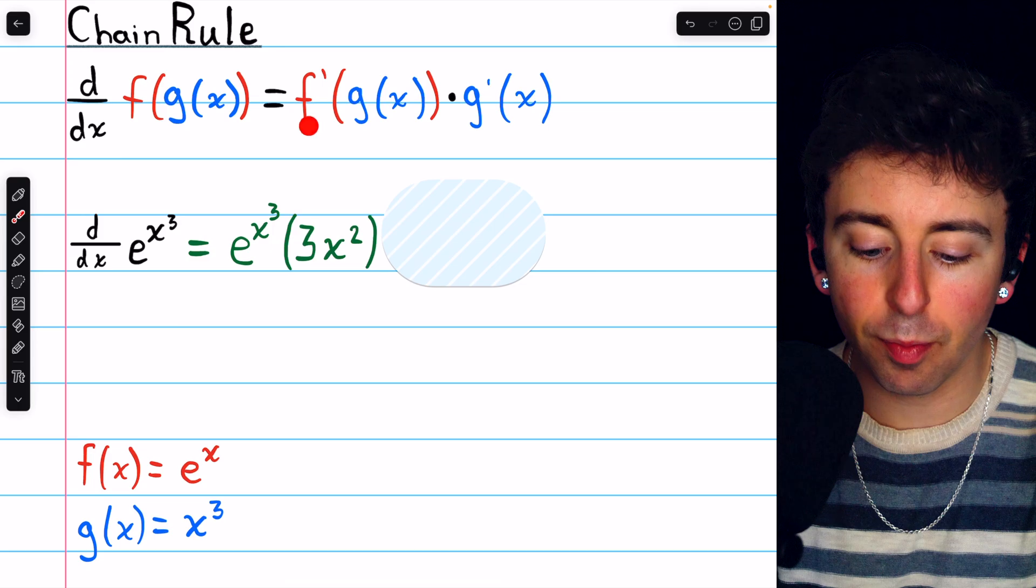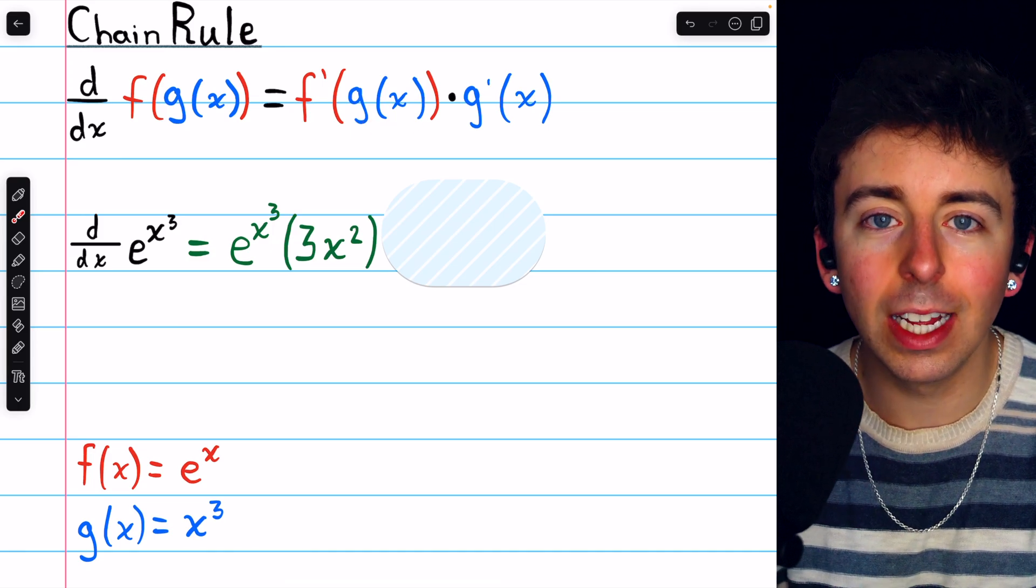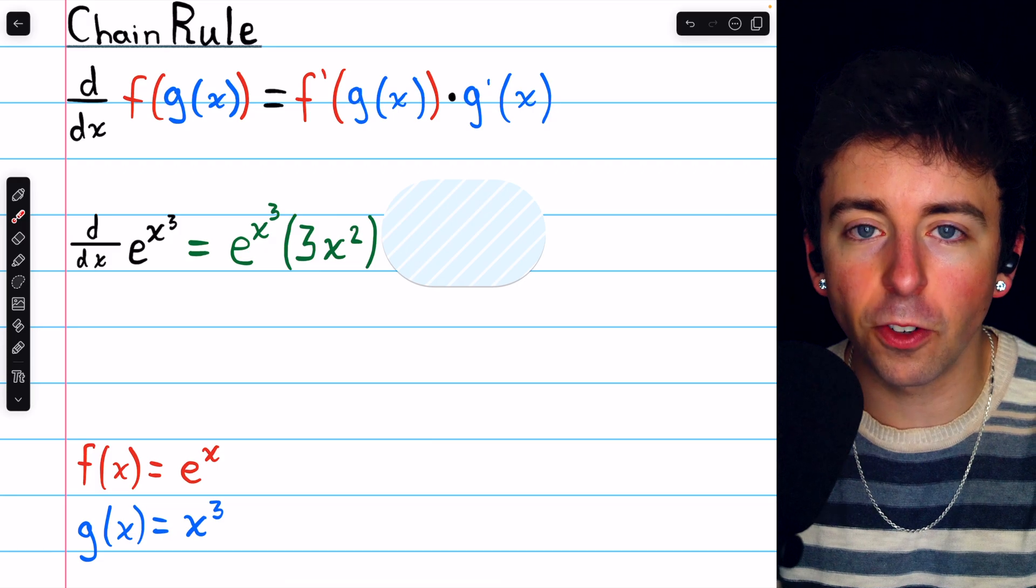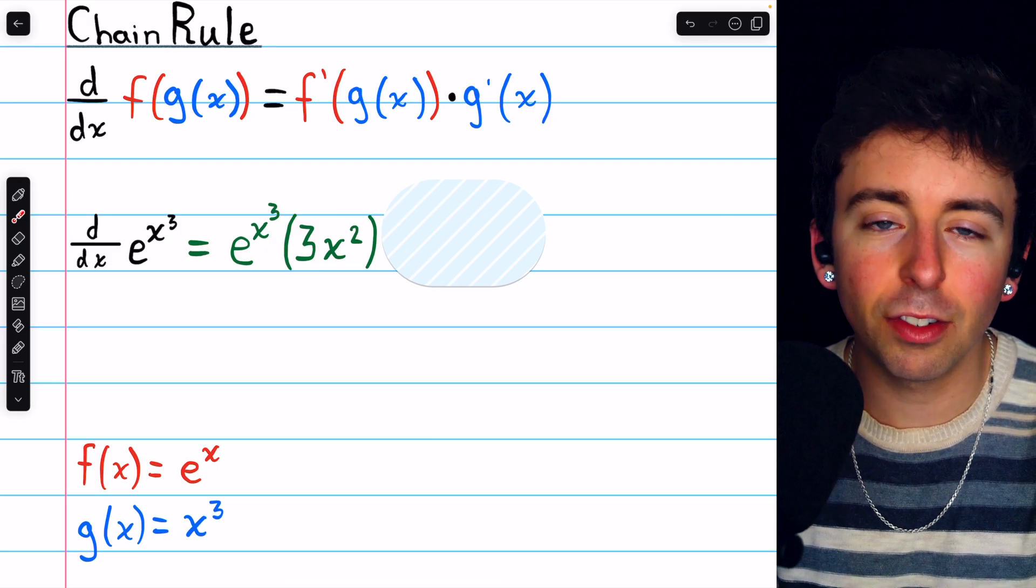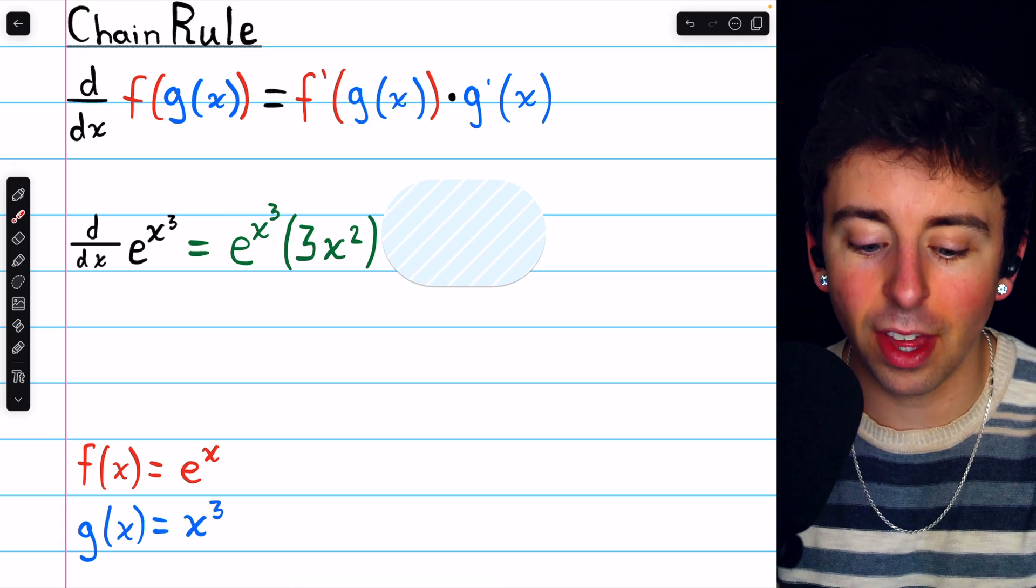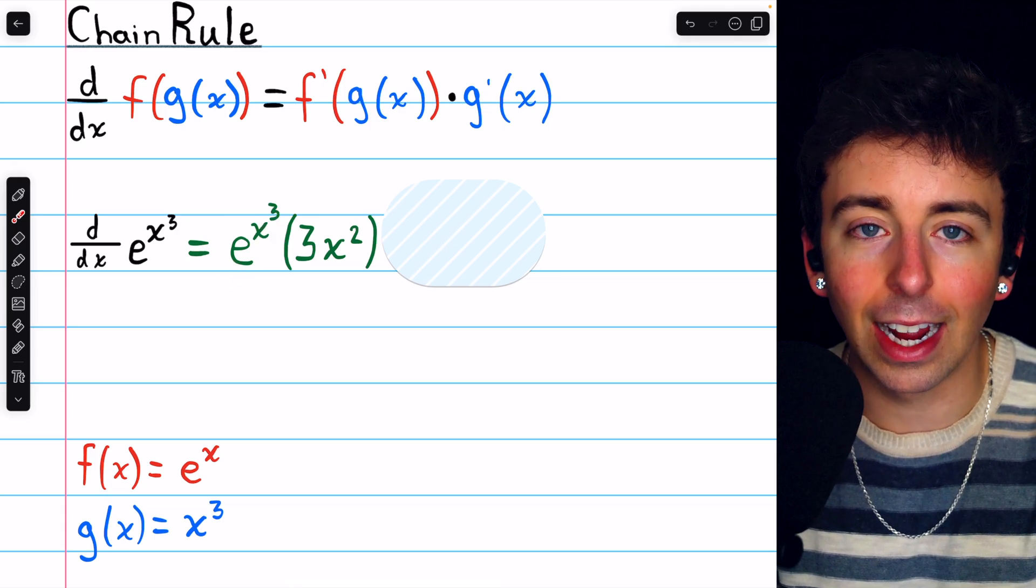Alright, for the derivative, f prime of g of x is where we start. That's the derivative of the outside function, leaving the inside function unchanged. The derivative of e to a thing is just e to that thing, and we can't change the thing. So e to the x cubed.